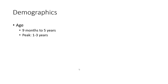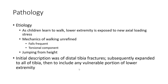Age range: 9 months to 5 years old, with peak incidence at 1 to 3 years old. Etiology: as children learn to walk, the lower extremity is exposed to new axial loading stress, with mechanics of walking unrefined and frequent torsional components.